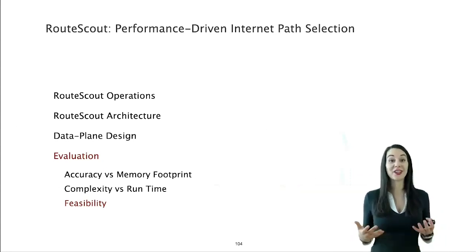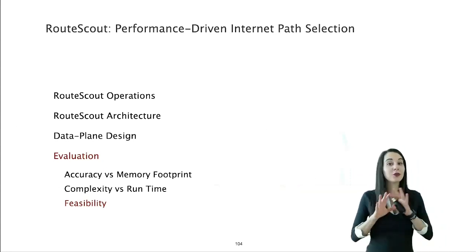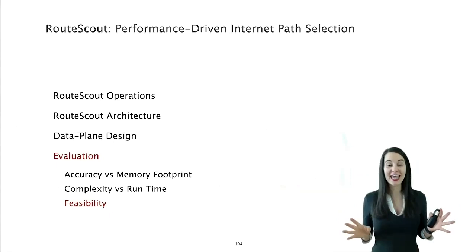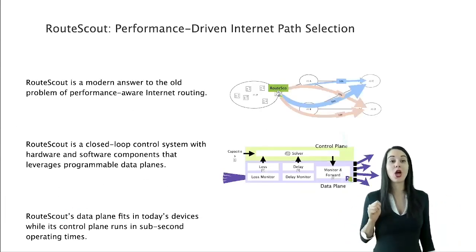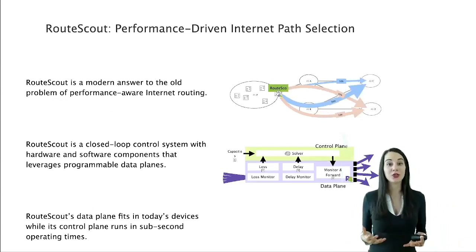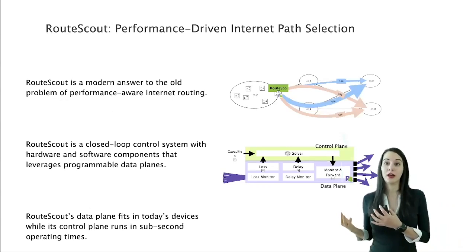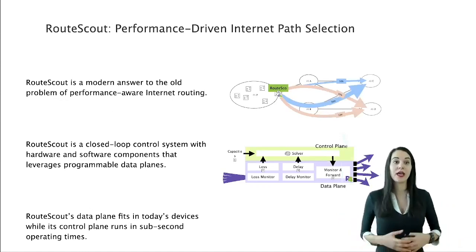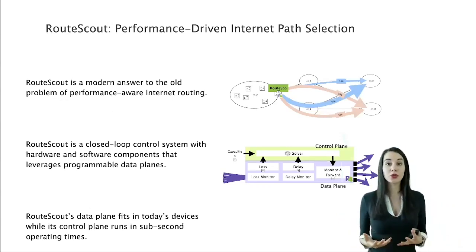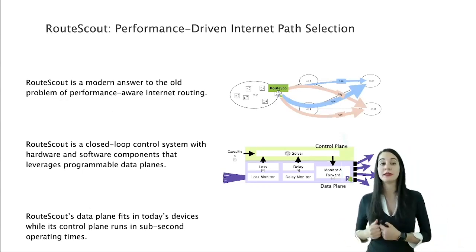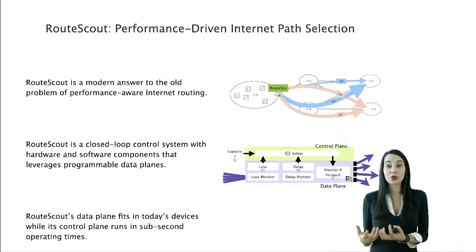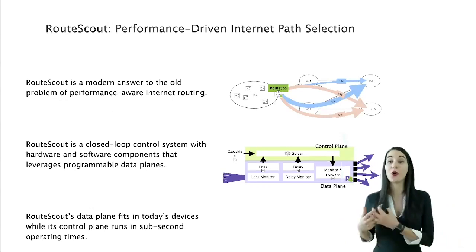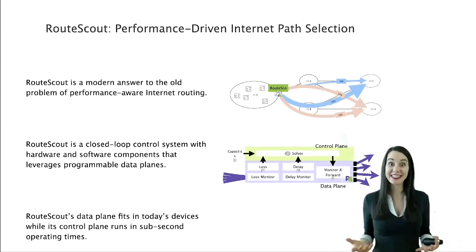With this, I conclude my talk, and if you intend to forget everything I just said, please remember just these three key points. RouteScout is a modern answer to an old problem, that of performance-driven internet routing. It is designed as a closed-loop control system that leverages programmable data planes, and its data plane fits in today's devices, while its control plane runs in sub-second operating times. Thanks a lot, and I'm happy to take your questions.